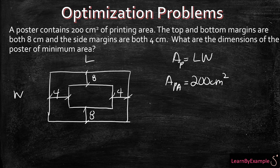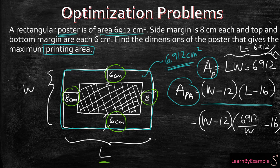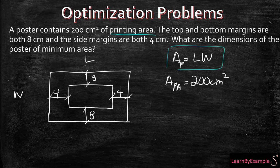It's opposite of the other problem where we were given the area of the poster. In this example you're given the area of the printing area. So it doesn't really help us to refer to things as length and width. We have to be looking at new dimensions.